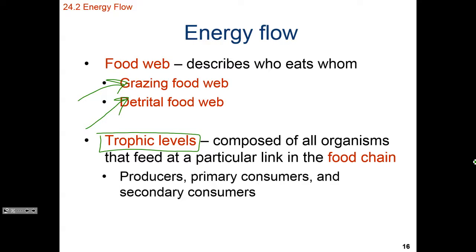Generally speaking, the farther down on the food chain, the closer that organism is to the producer level, the lower its trophic level is. If that organism is eaten by many different other organisms, it's going to be at the bottom or have a low trophic level. If that organism is not consumed by other organisms, or consumed by few, it will be higher up on the trophic level. We as human beings don't have many natural predators, so we're pretty high up on the trophic level.